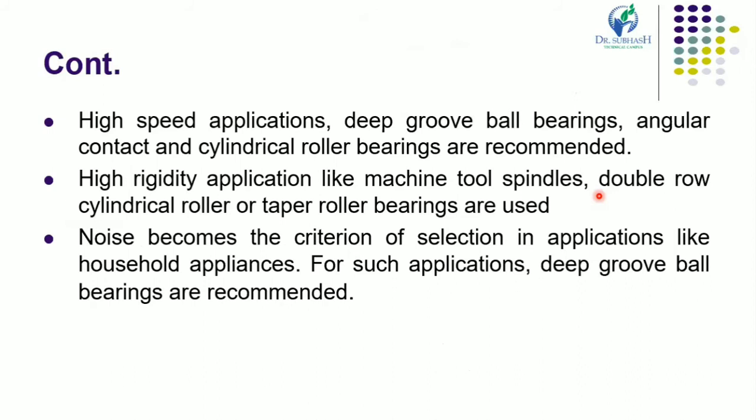Where rigidity controls the selection — such as in machine tool spindles — double row cylindrical roller bearings or taper roller bearings are used. The line of contact in these bearings, as compared with the point of contact in ball bearings, improves rigidity. When noise becomes the criterion of selection, such as in household applications, deep groove ball bearings are recommended. Knowledge of the design characteristics of different types of bearings and proper appreciation of the needs of an application enables the designer to select a proper type of bearing. The characteristics of the bearing should match with the requirements of the application.